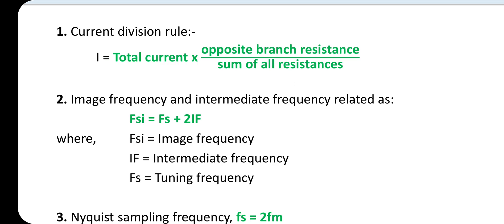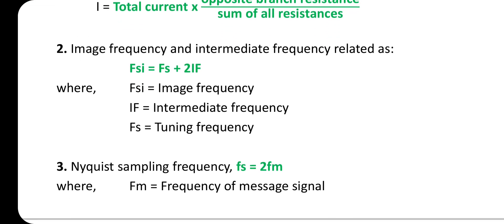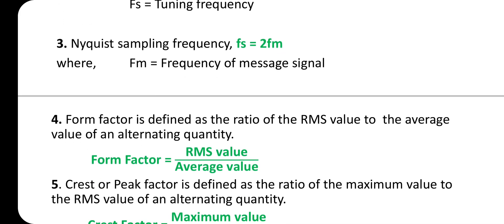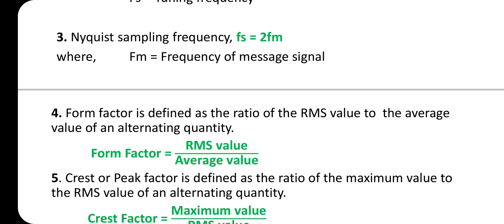Second one: Image frequency and intermediate frequency are related as f_si equal to f_s plus 2f_IF, where f_si is the image frequency, f_IF is the intermediate frequency, and f_s is the tuning frequency. Third: Nyquist Sampling Theorem — f_s equal to 2f_m, where f_m is the frequency of the message signal (maximum frequency).